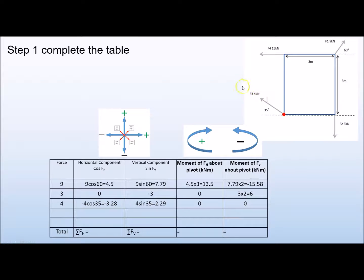Force 3 is a 4 kN force going up and to the left, so we have a negative horizontal component and a positive vertical component. However, because this force is acting directly on our pivot point, there is no distance, so there is no moment — both the horizontal and vertical moments are zero.